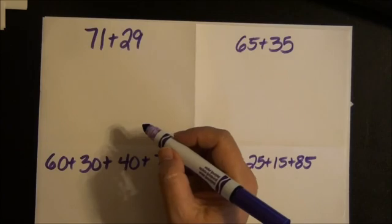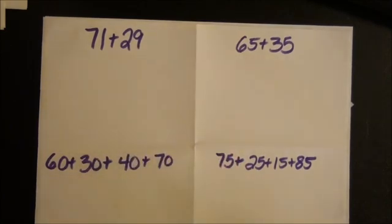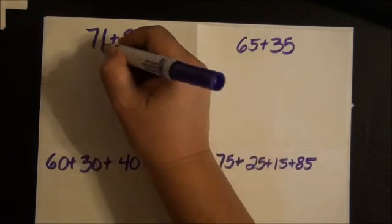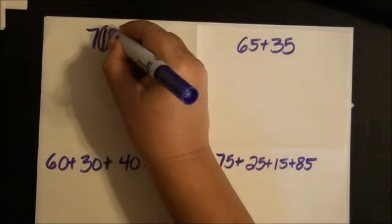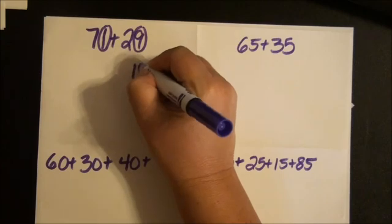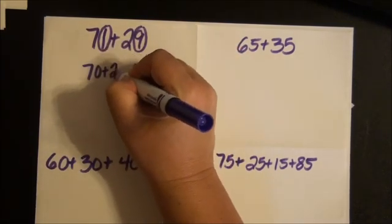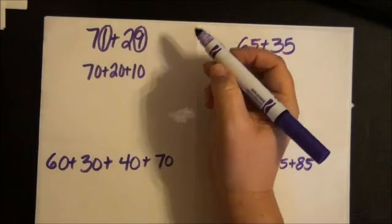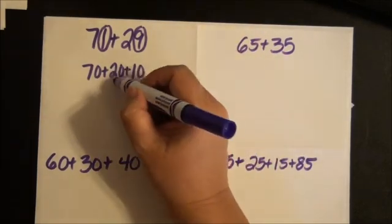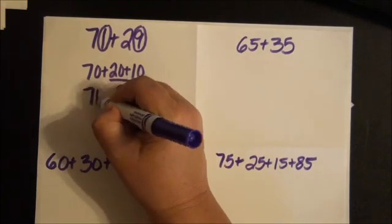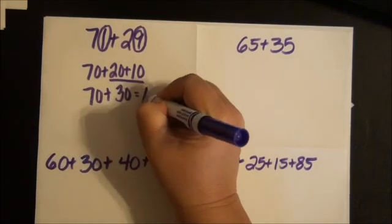So, I don't have anything here that makes 100, however, I do have something that makes 10. I have 1 and 9 that makes 10. I still have my 70 and my 20. If I add the easy ones, 20 plus 10 is 30, 70 plus 30 equals 100.